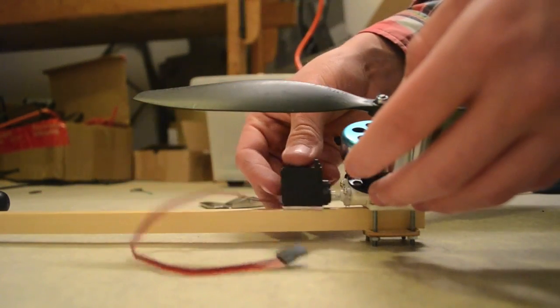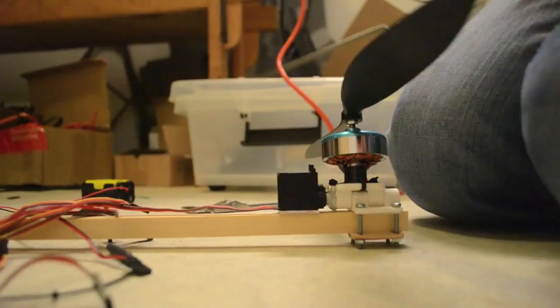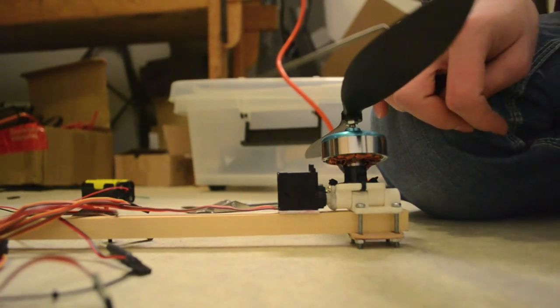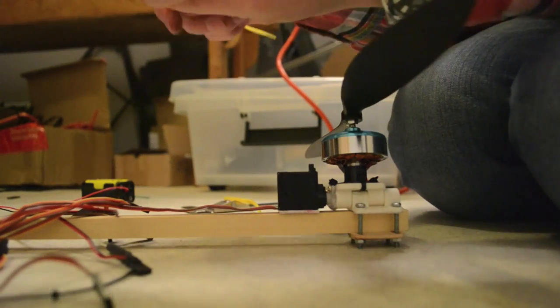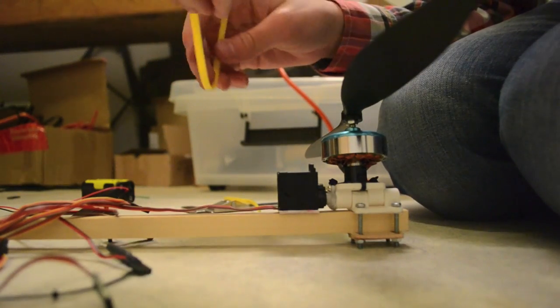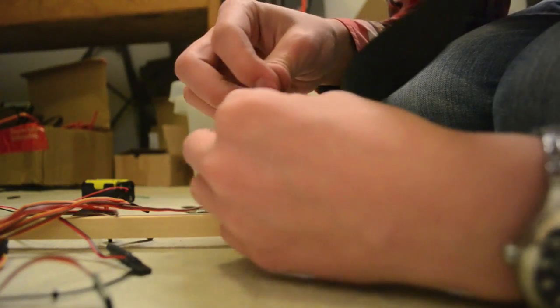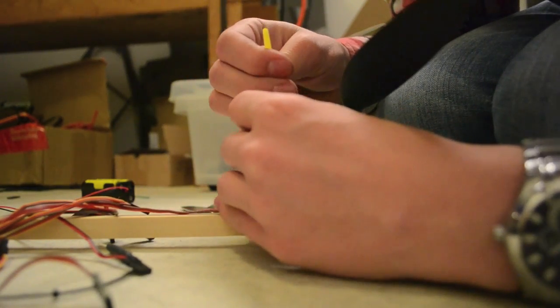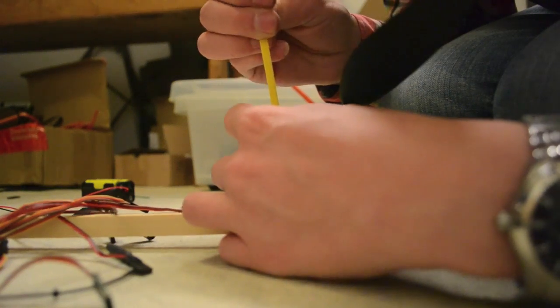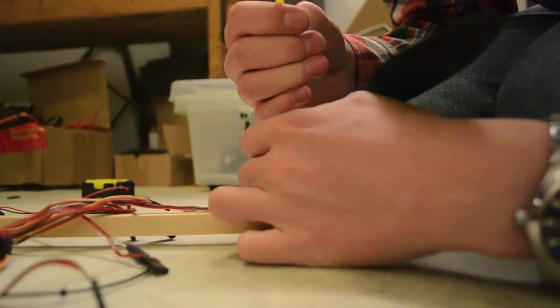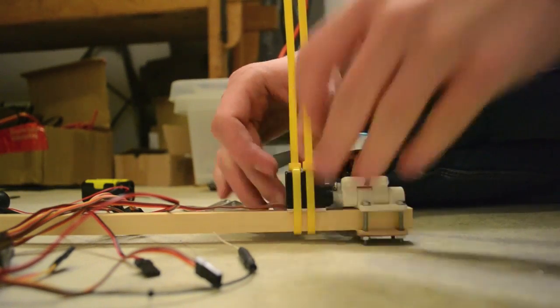We now need to mount the servo. Make sure you have centered the servo before attaching it. Once you have the servo centered, you're now going to mount it with zip ties. These zip ties are a little bit bigger than the ones we used before because I need to hold this in place. Once you have centered it properly, connect it to the yaw mechanism. Once you mount the servo like that, you can go ahead and cut.